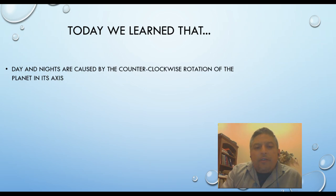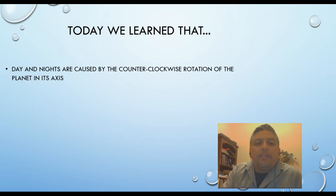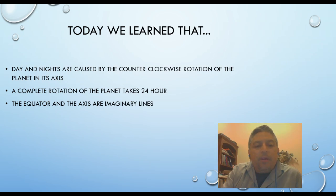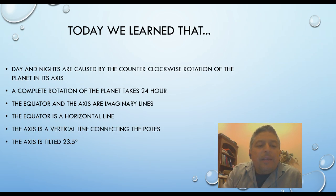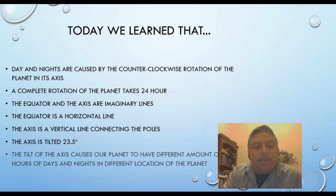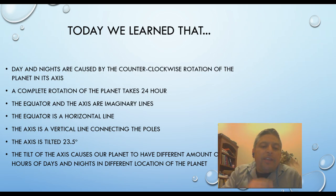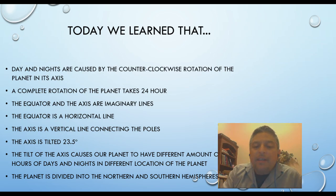Let's see what we have learned today. Today we learned that day and night are caused by the counterclockwise rotation of the planet on its axis. A complete rotation of the planet takes 24 hours. The equator and the axis are imaginary lines — the equator is a horizontal line and the axis is a vertical line connecting the poles. The axis is tilted 23.5 degrees, and the tilt of the axis causes our planet to have different amounts of hours of day and night in different locations. The planet is divided into northern and southern hemispheres.